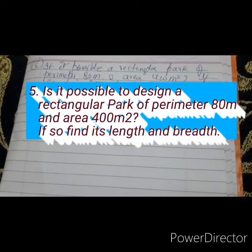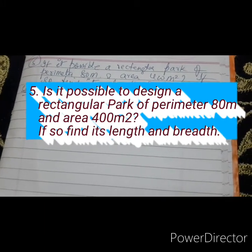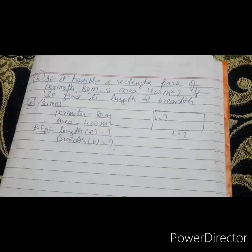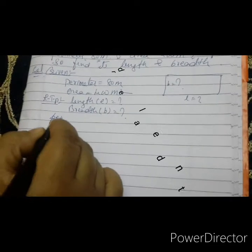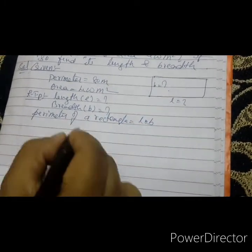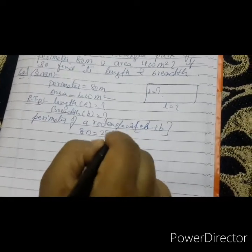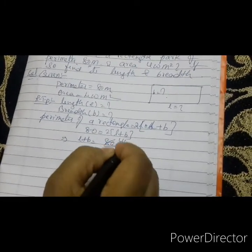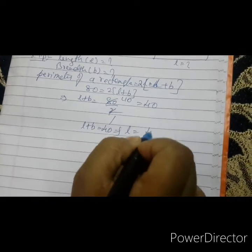Now fifth problem. A rectangular park of perimeter 80 metre and area 400 metre squared — if so, find its length and breadth. Is it possible to form a rectangle when perimeter is 80 metre and area is 400 metre squared? Perimeter of a rectangle equals 2 into (L plus B). So 80 equals 2 into (L plus B), which gives L plus B equals 40. Or, L equals 40 minus B.